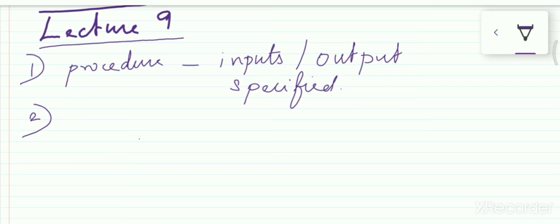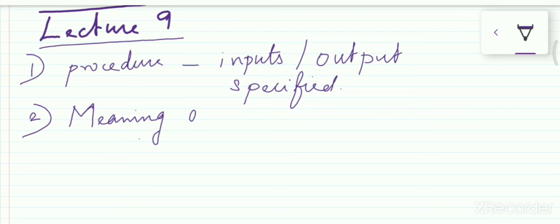Now, the second important style we need to follow: the meaning of variables should be very clear. Each variable's meaning should be very clear.